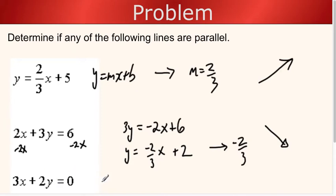Let's try this one over here. I'll subtract 3x on both sides, which gives me 2y equals negative 3x. And if I divide both sides by 2, I get y equals negative 3x over 2, or negative 3 over 2x. And again, that is not the same as positive two-thirds. So this one is not parallel.